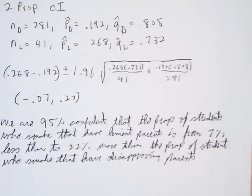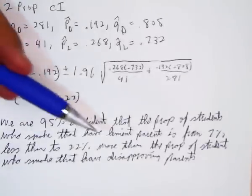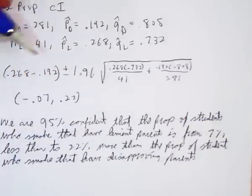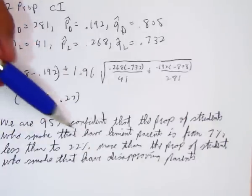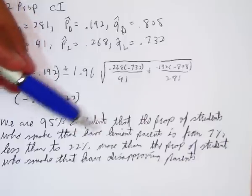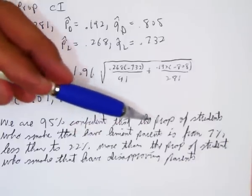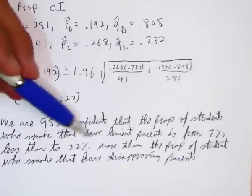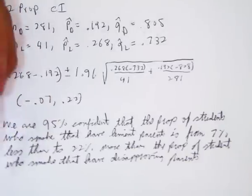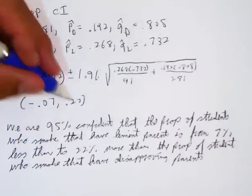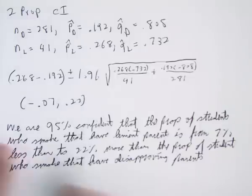Now, if you did this interval the other way, you got the negative .22 and you got the .07 the other way. So, your interval would read we are 95% confident that the proportion of students who smoke that have disapproving parents is from 22% less than to 7% more than the proportion of students who smoke that have lenient parents. It would just be the opposite way. Your interval would be exactly the same. It would just be switched around.